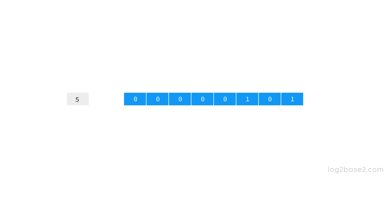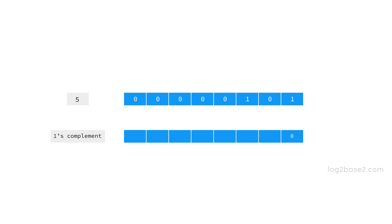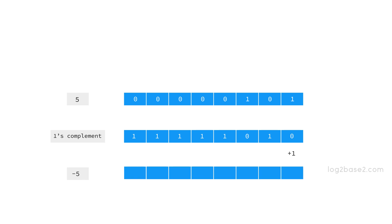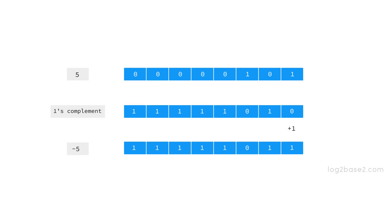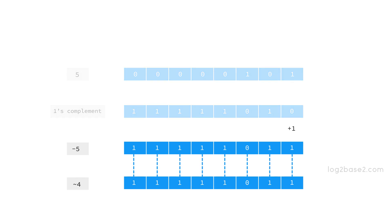To find the two's complement of minus five, find the one's complement of five and then add one. In one's complement we just invert each bit: one becomes zero, zero becomes one, one becomes zero, zero becomes one, and similarly all the zeros become one. Now we add one to it, and we get 1 1 1 1 1 0 1 1. If we closely look, the representation of minus five is the same as the complement of four. Hence, the value of complement of four is equal to minus five.